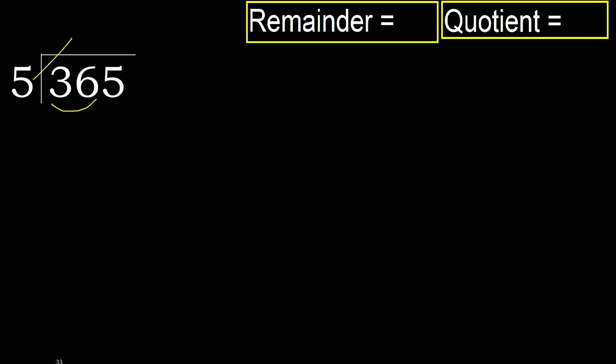5 multiplied by which number is nearest to 36 but not greater? 5 multiplied by 7 is 35, because 5 multiplied by 8 is 40, which is greater. 35 is not greater than 36. 36 minus 35 equals 1.